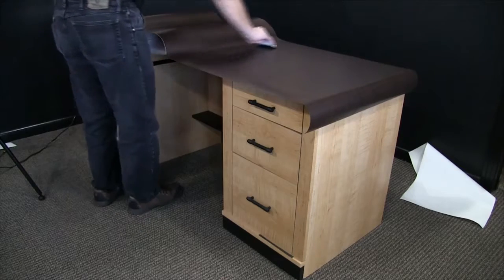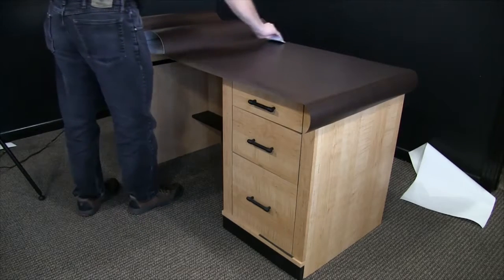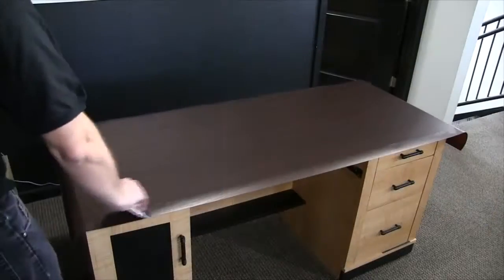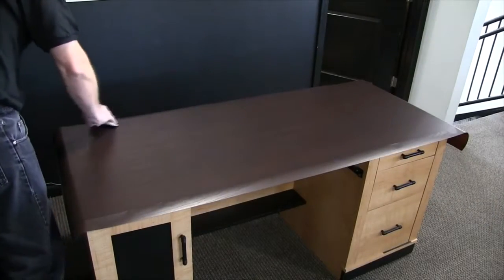While slowly pulling the liner away from the material, utilize overlapping squeegee strokes to activate the adhesive and adhere the Bellevian to the substrate. After applying Bellevian to the entire desktop, it's time to wrap the sides.